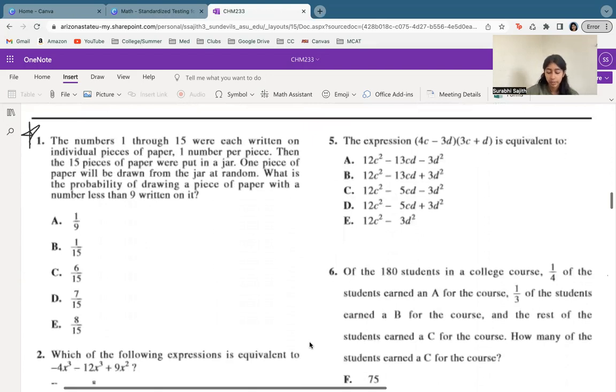We're starting with number one. We have 15 pieces of paper that were put into a jar. One piece will be drawn. What is the probability of drawing a piece of paper with a number less than nine written on it? So let's think about this. We've got 1, 2, 3, 4, 5, 6, 7, 8, 9, 10, 11, 12, 13, 14, 15. We want less than nine.